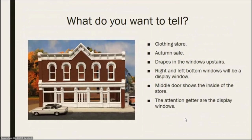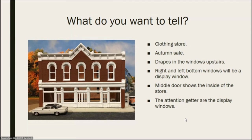This picture of the building was before I started — I took it to show that if you just put a building on your layout, that's what it looks like: bare, doesn't say much. I wanted this store to be a clothing store. Since my background is autumn, I needed an autumn sale display of clothes, drapes in the windows upstairs, and the left and right bottom windows would be display windows. The middle door shows the inside of the store, but the attention-getters are the display windows.